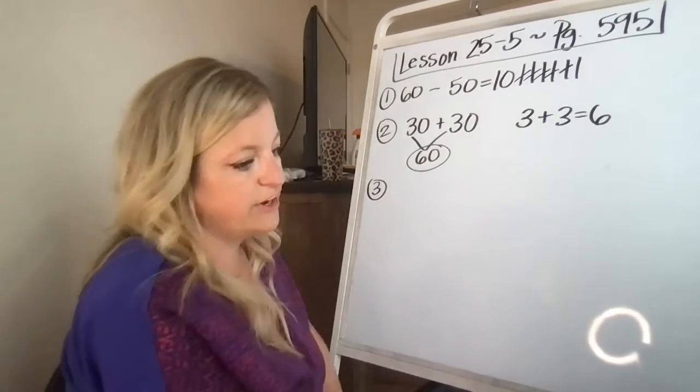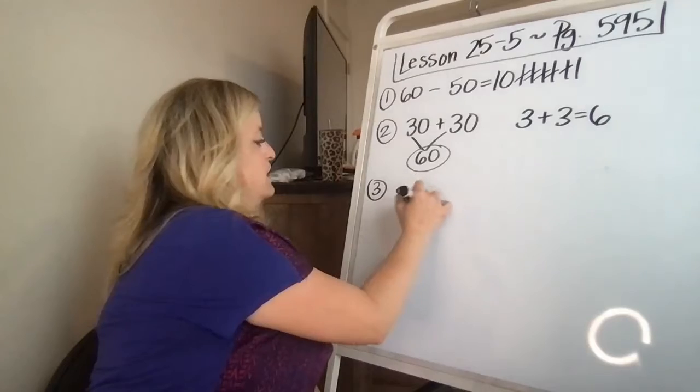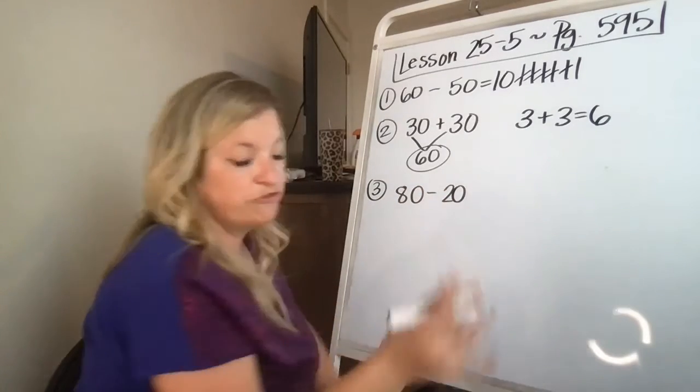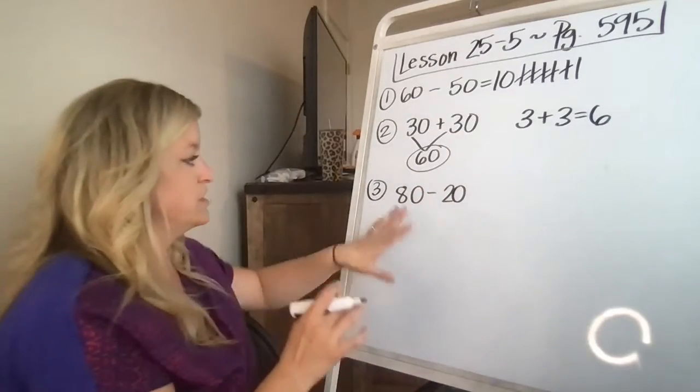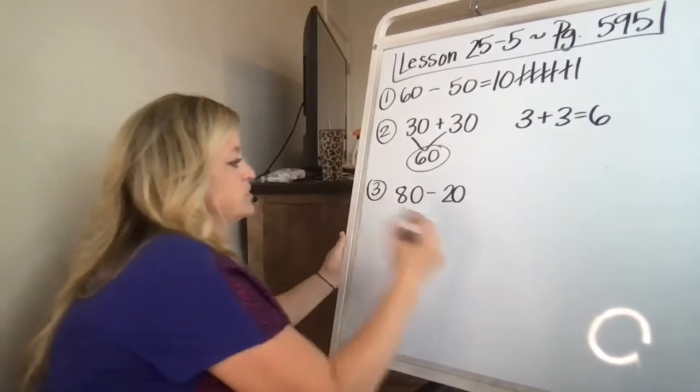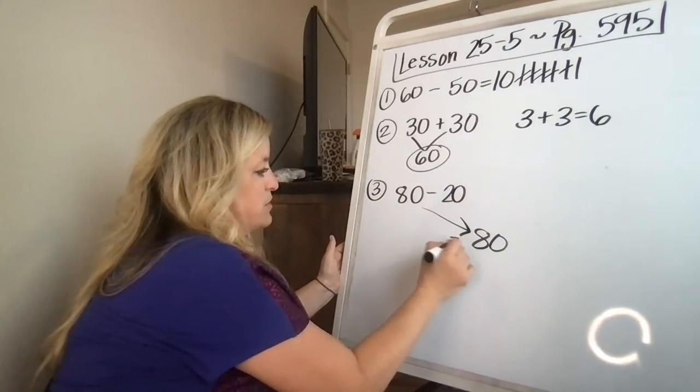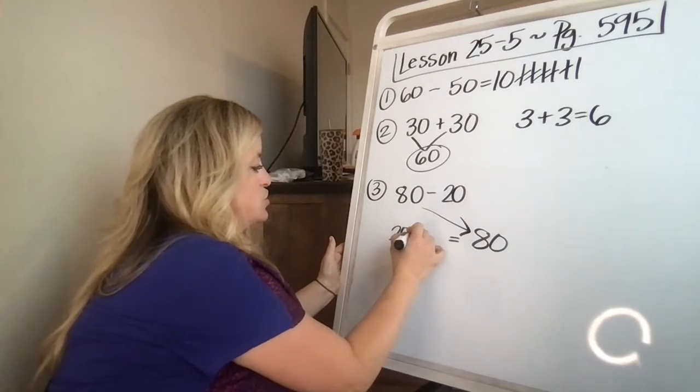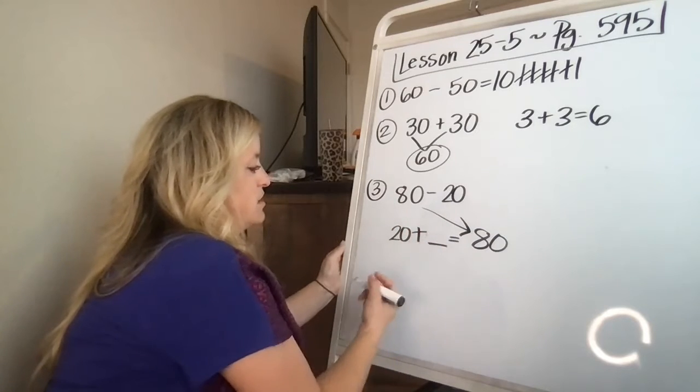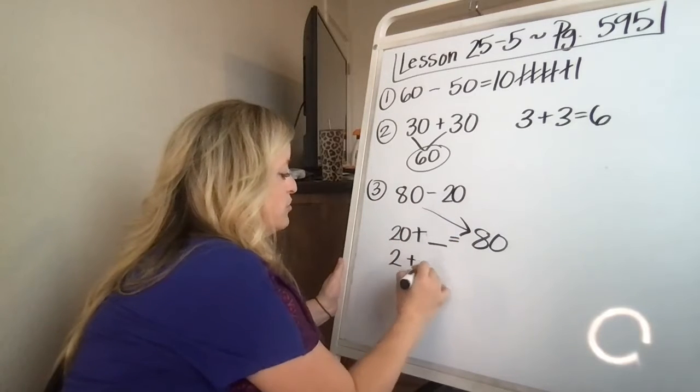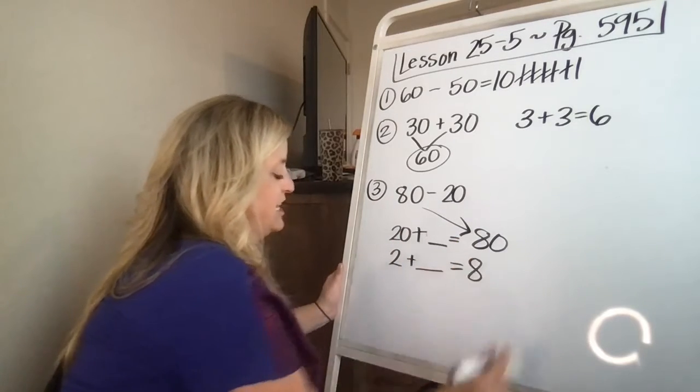Number three, find 80 minus 20. So you could flip it and turn it into addition because you can use addition to help you. So addition always ends with the biggest number. So we're going to put 80 at the bottom. And the next one we know is 20 plus blank equals 80. The book made it even easier and said two tens plus blank tens equals eight tens.